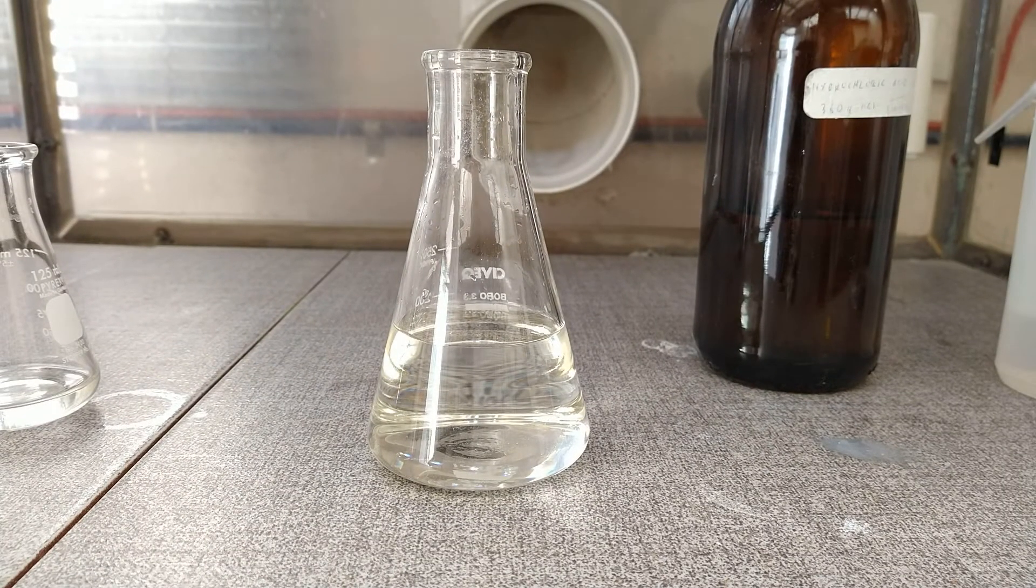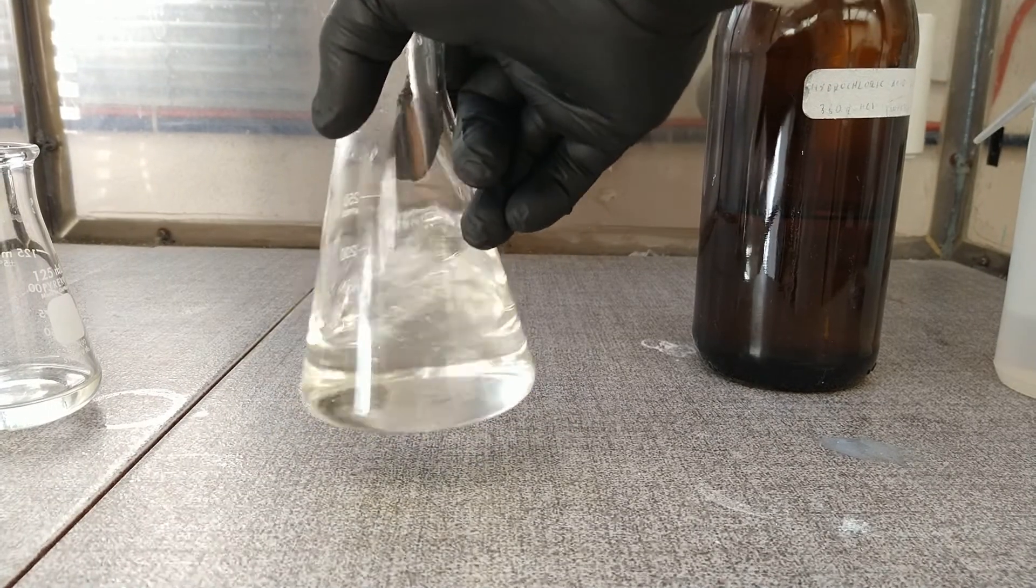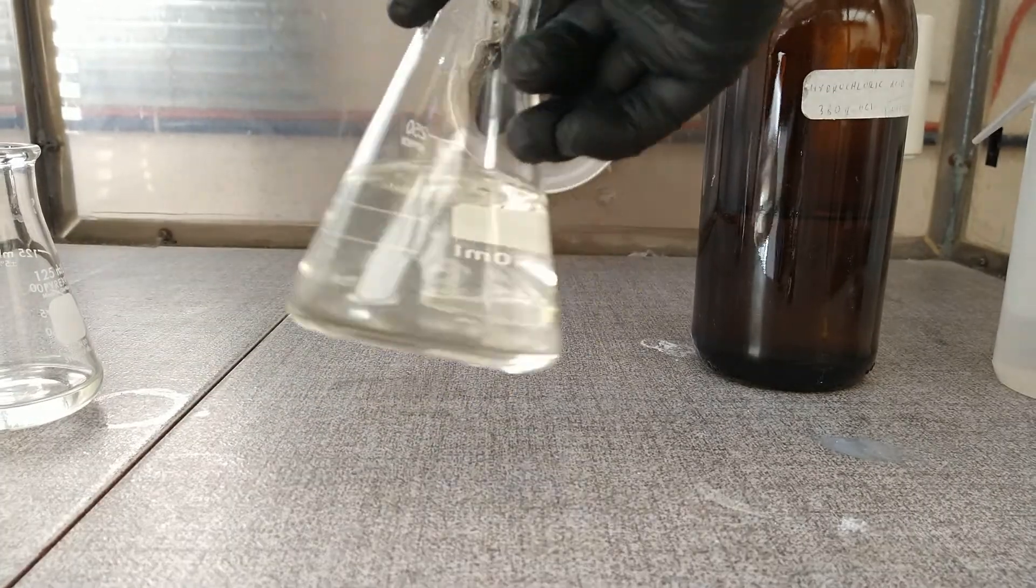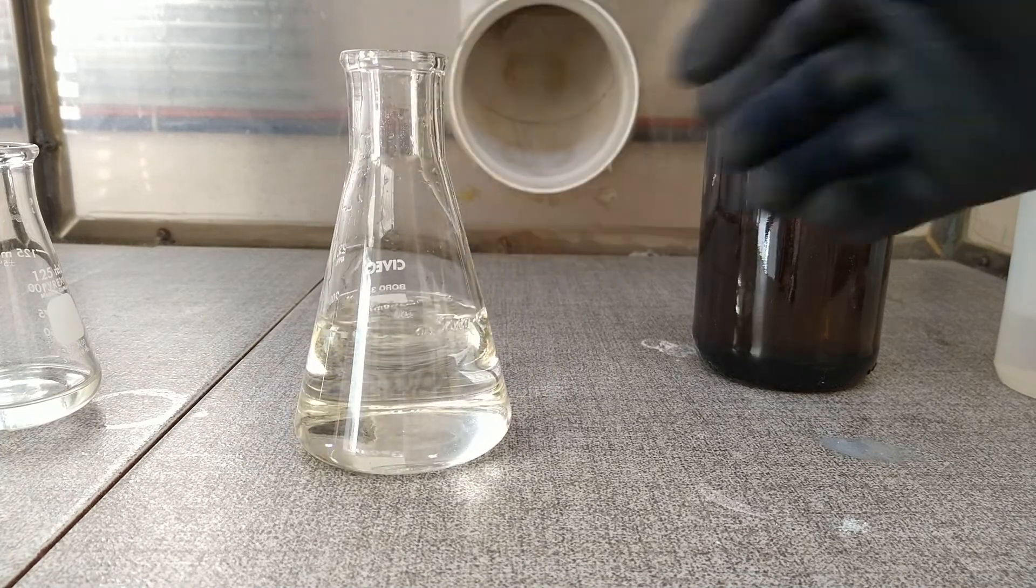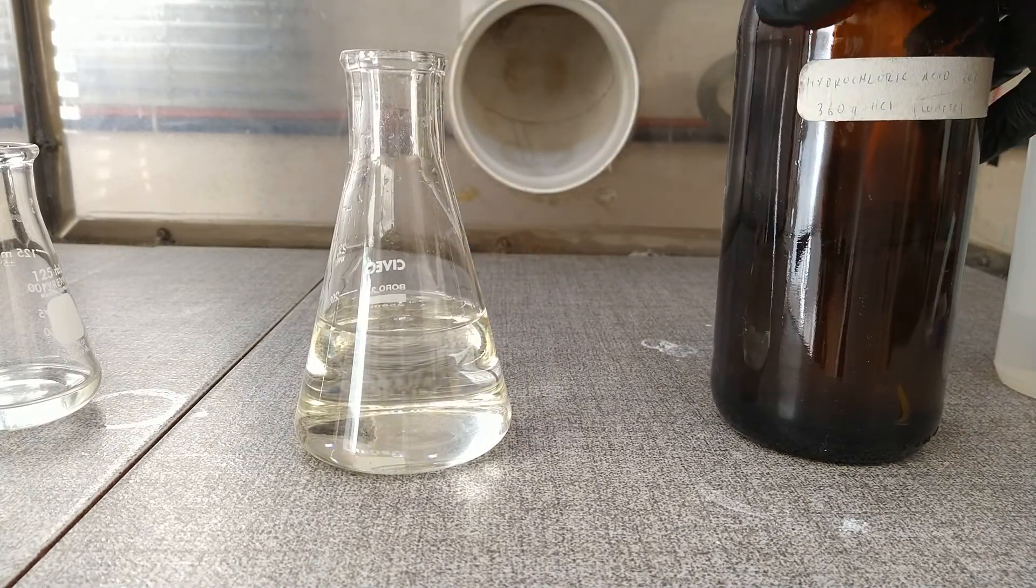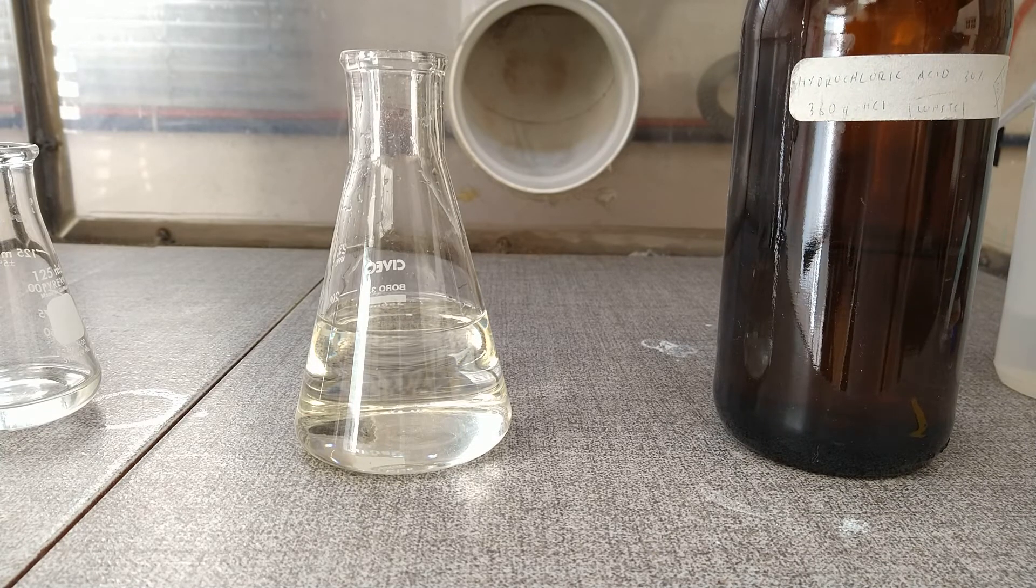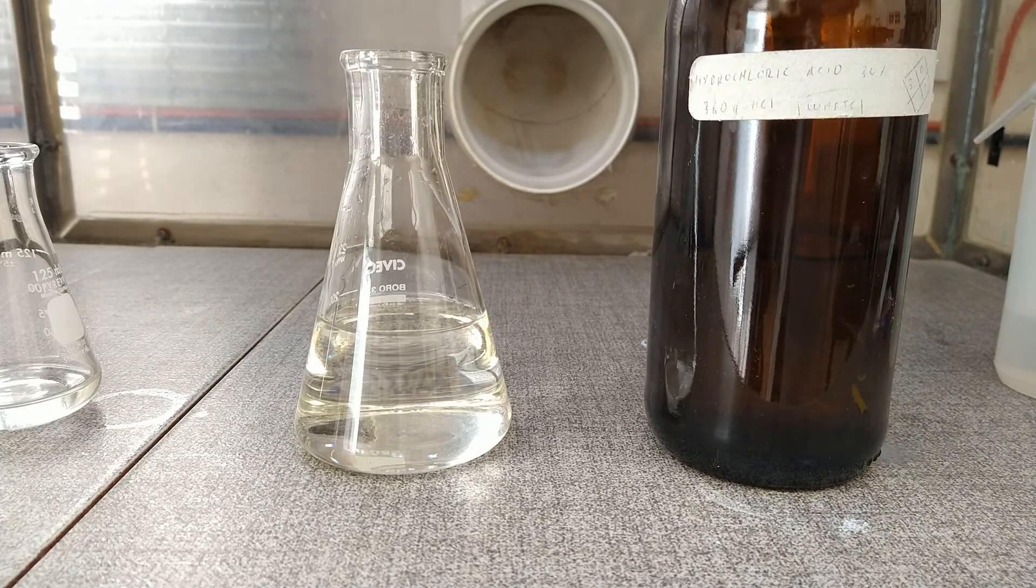Now that all the liquid has passed through the cotton filter, we are left with a nice clear solution of potassium adipate. In order to recover our product we need to make the solution acid again until around a pH of 4 or 3. Now we can add some concentrated hydrochloric acid.